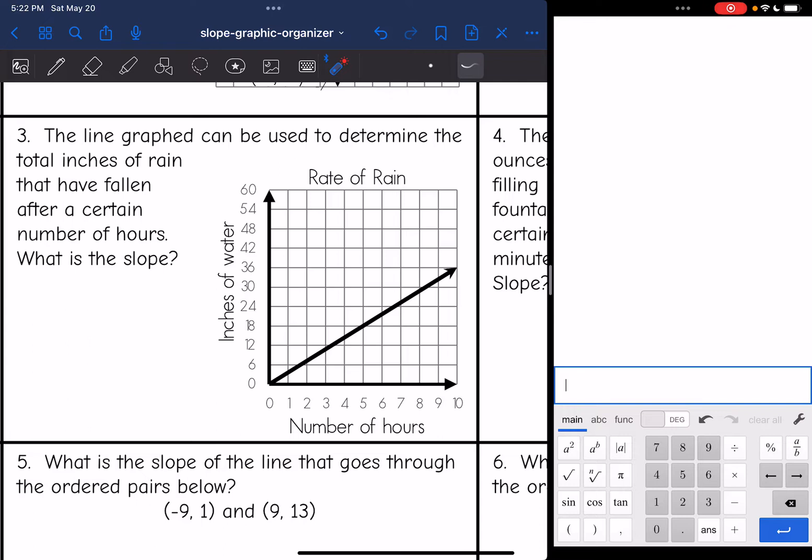So I notice it's positive. And if you notice the scale is counting by sixes. So on my rise, I'm going to have to count by sixes. So let's see if we can find two perfect points. It looks like the origin is one. And then I see another one right here. So I'm going to draw my slope triangle.